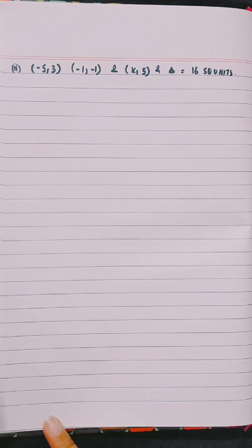Similarly, part 2 will be solved like this. Vertices are (-5,3), (-1,-1), and (k,5), and area of triangle is 16 square units.